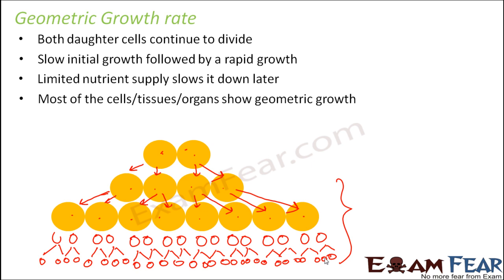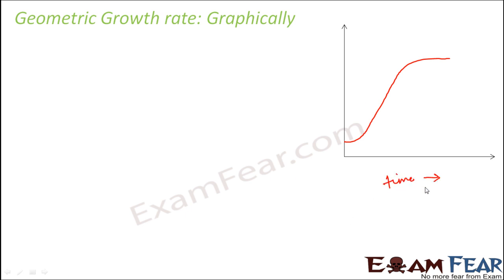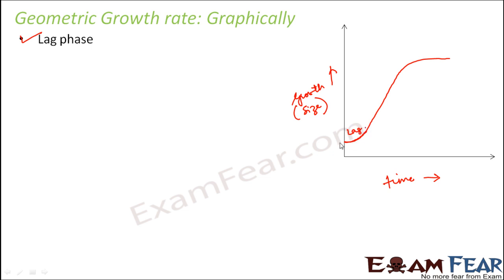So now we will try to plot the graph of geometric growth rate. If you plot the graph of geometric growth rate, taking time along the x-axis and the growth along the y-axis — say growth in terms of size — what happens is that as time increases, initially the growth is slow. So this first phase is known as the lag phase, where the growth is increasing but it is quite slow. The term lag means something which is lagging behind, so this represents the slow initial growth.